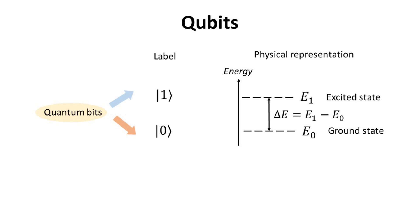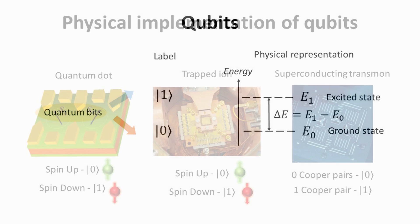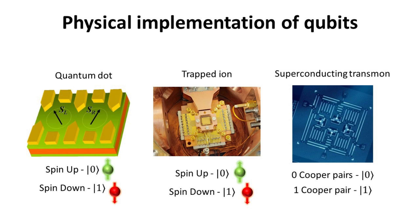The energy difference between these states, delta E, needs to be gained or lost in this exact discrete amount in order to change the state from one to the other. Physically, the two-level quantum system can be the spin of electrons confined in quantum dots or that of trapped ions, as shown. Or it could also be the presence and absence of Cooper pairs in superconducting systems, among many other types of qubit platform.